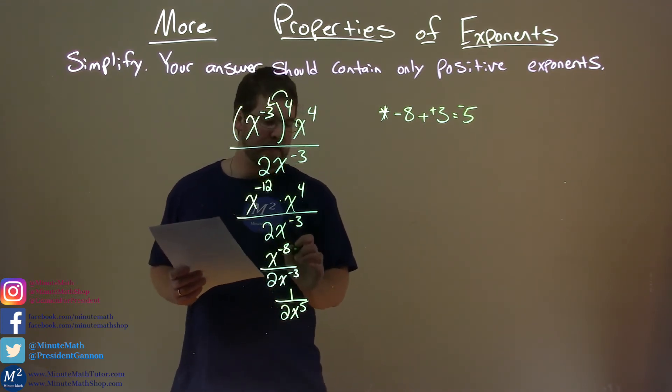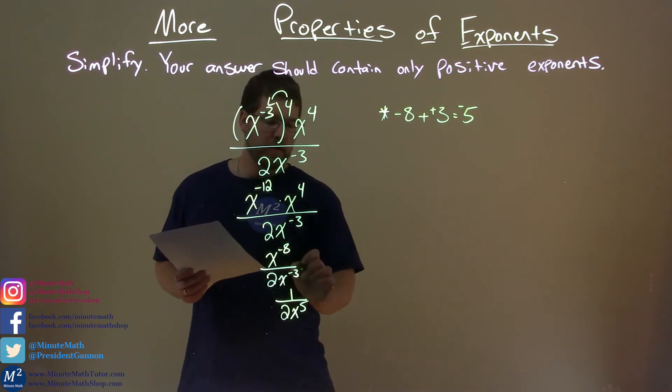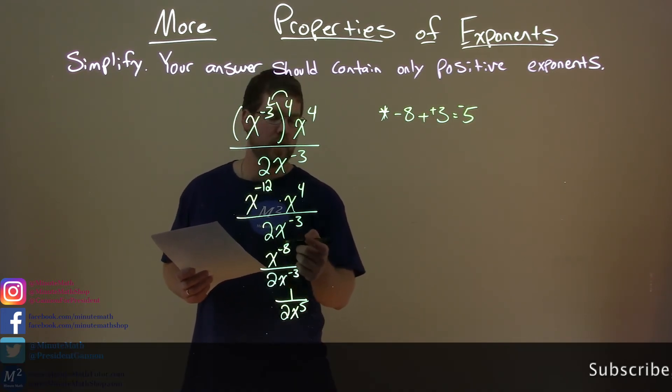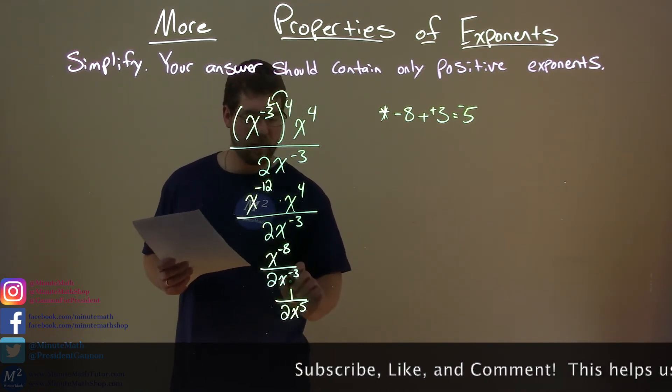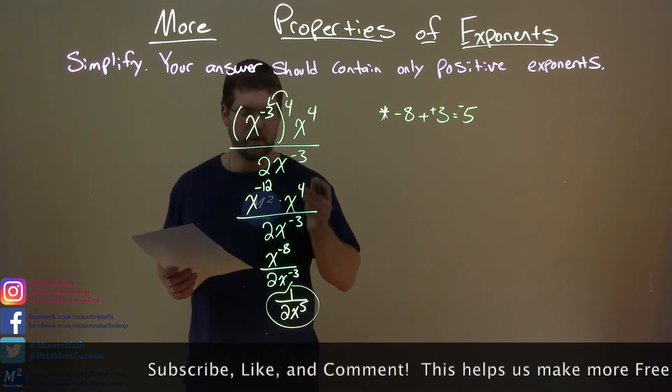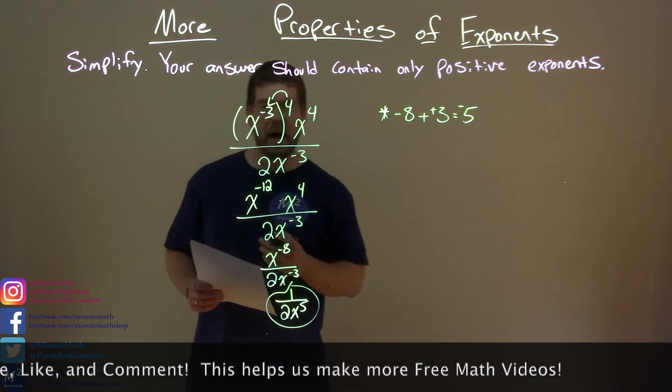And the way you can kind of see it is, we have negative up here, negative down here, but combined they kept it negative. Negative 8 was the bigger number, which keeps it down. So it was negative 5 in the numerator, positive 5 in the denominator. Our final answer is 1 over 2x to the positive fifth power.